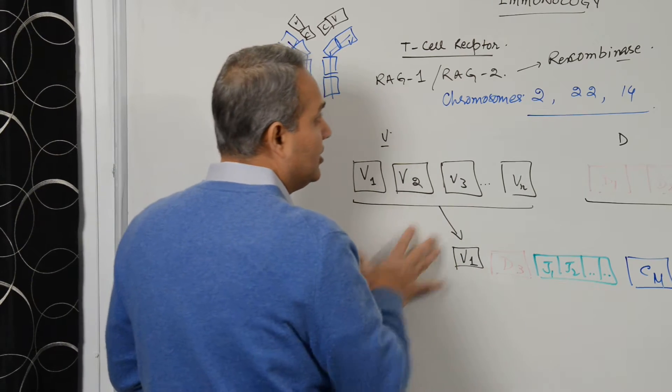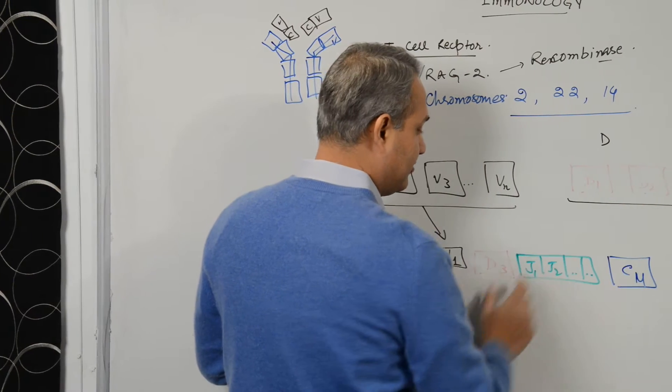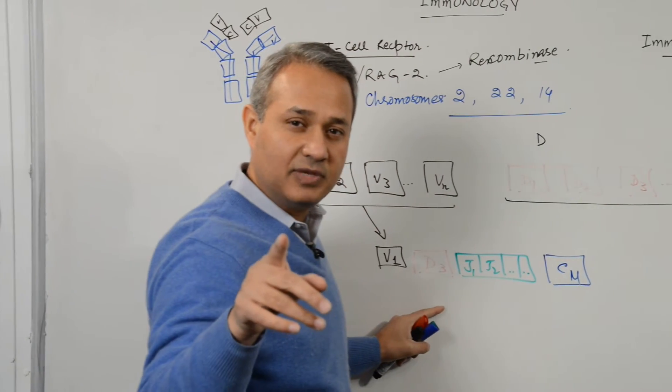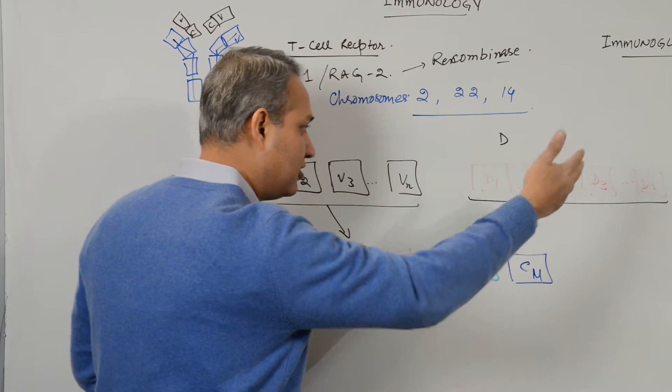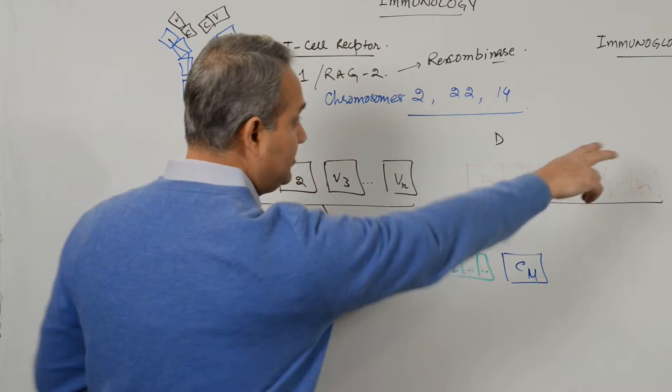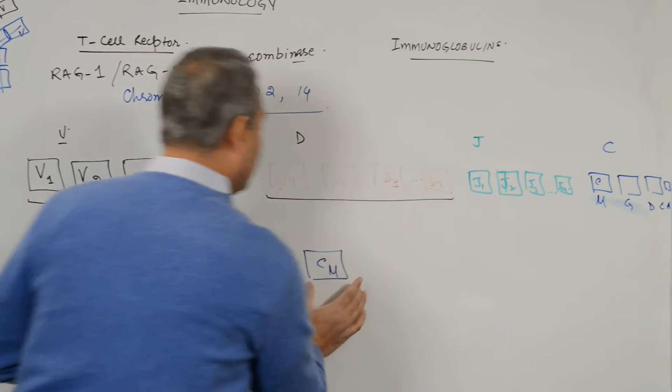All right, so now the recombinase has picked up V1 from this pool, has picked up D3 from this pool. Remember you were a recombinase with me as well, so you were picking up something else. Maybe you picked up D1 or D2 or D20. The J chain came here, so the J gene pool and then the constant we picked up one of them.